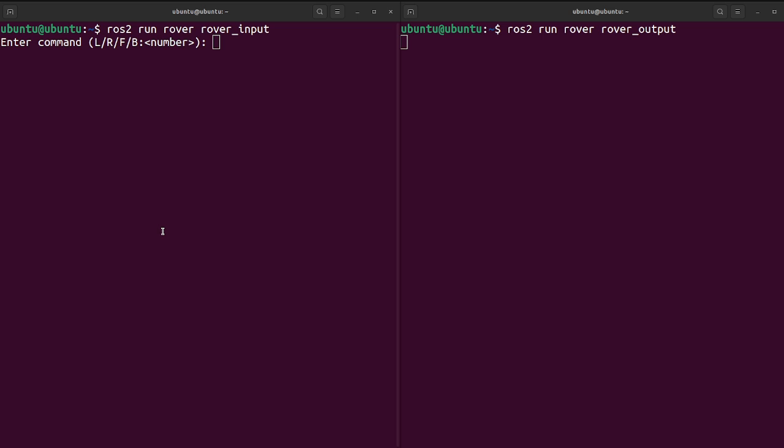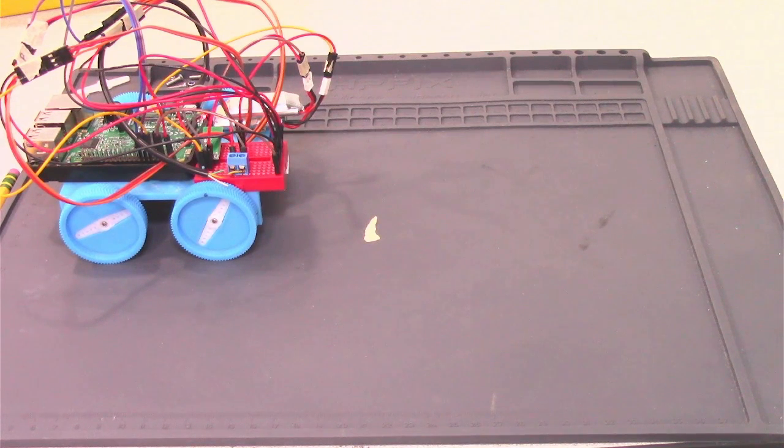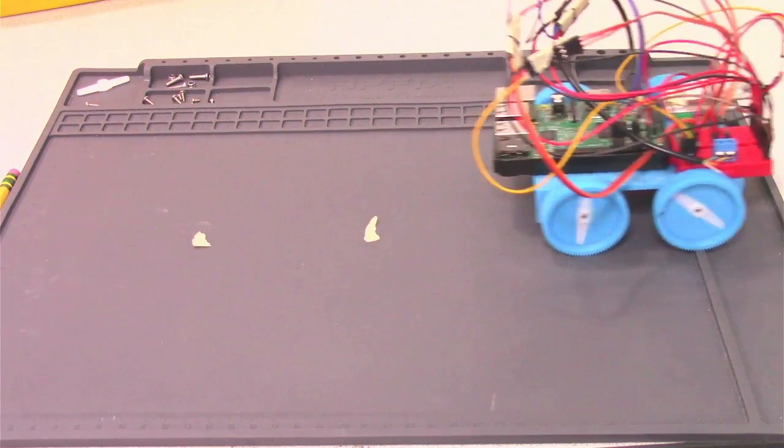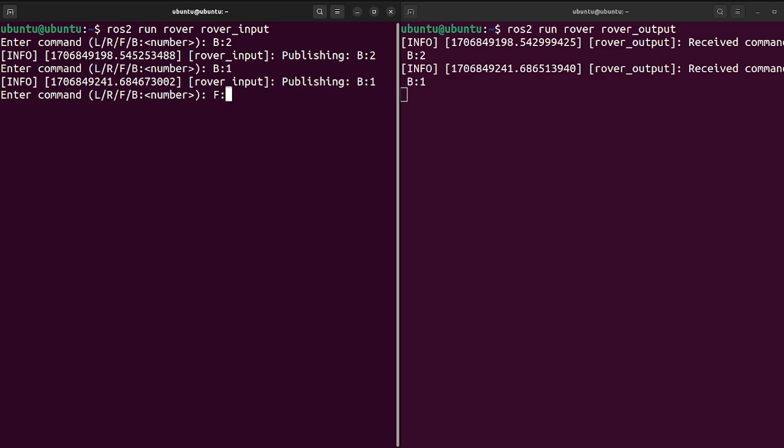I have each of my nodes running to control the robot. If I type B for backwards two, it'll go backwards two rotations. And if I send F two, it'll go forward two rotations.